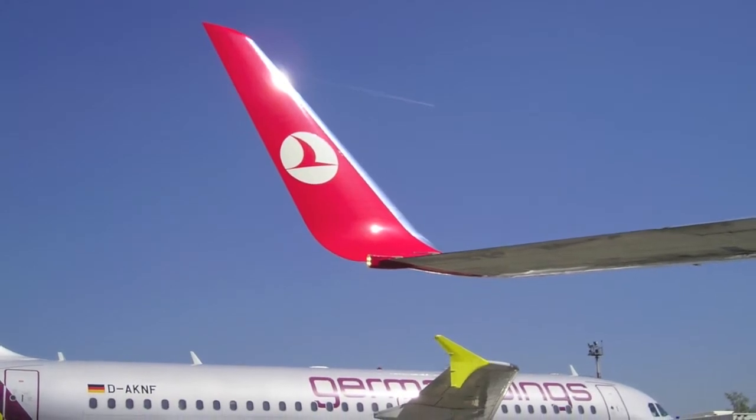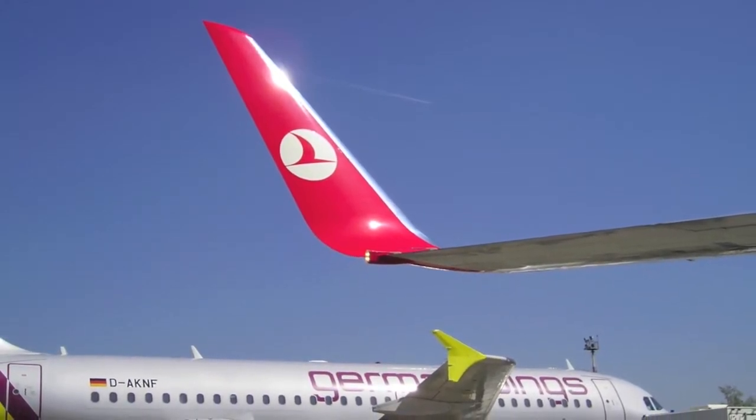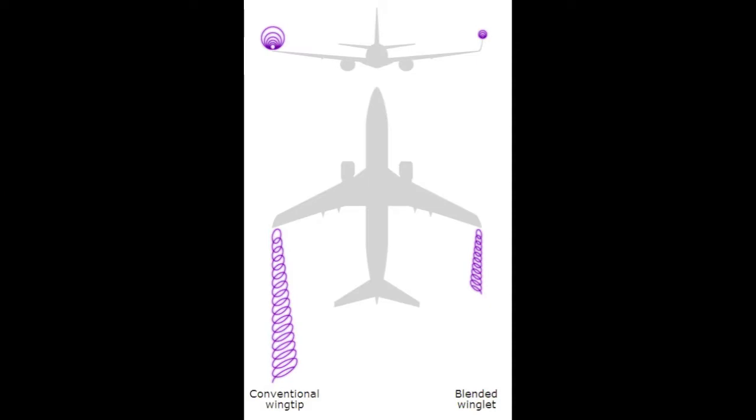One way of reducing this effect is by adding winglets, as seen in this picture. The winglets move the vortex to the very tip of the airfoil, allowing the entire wing to produce lift. The winglets also decrease the size of the vortices.